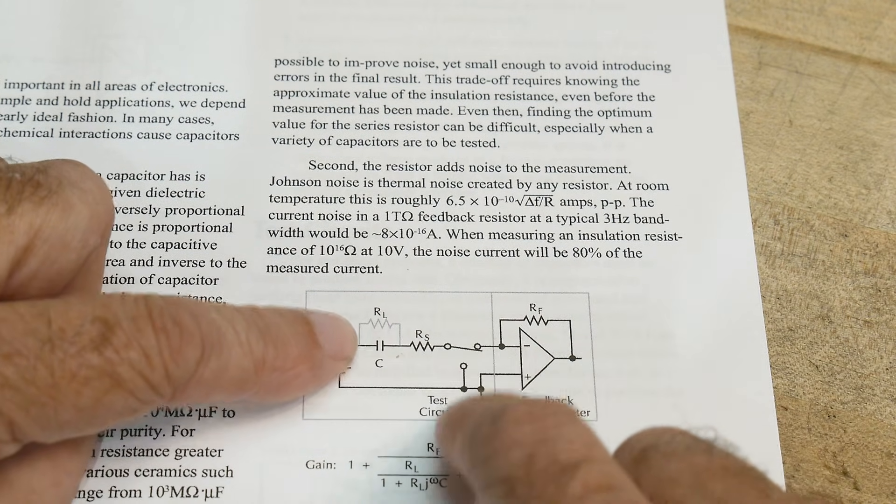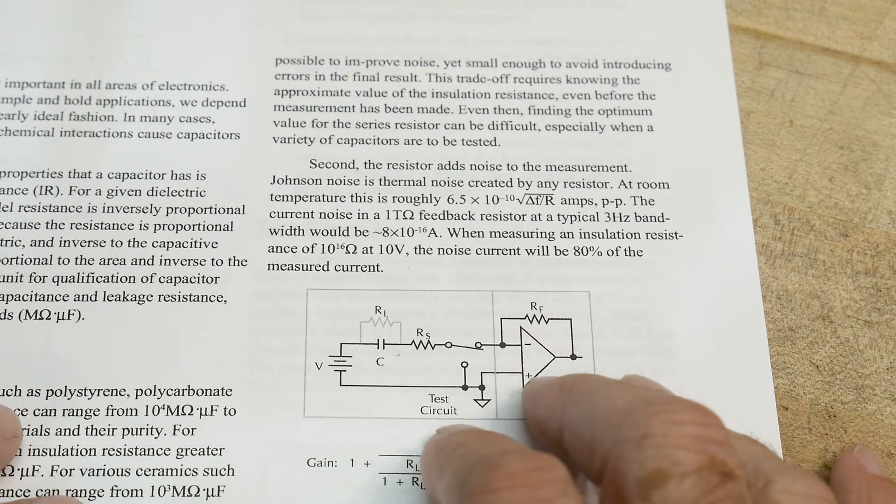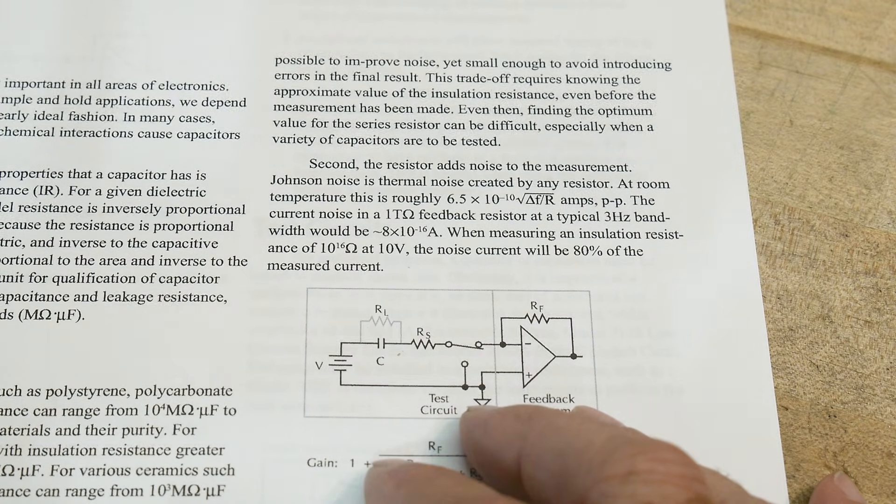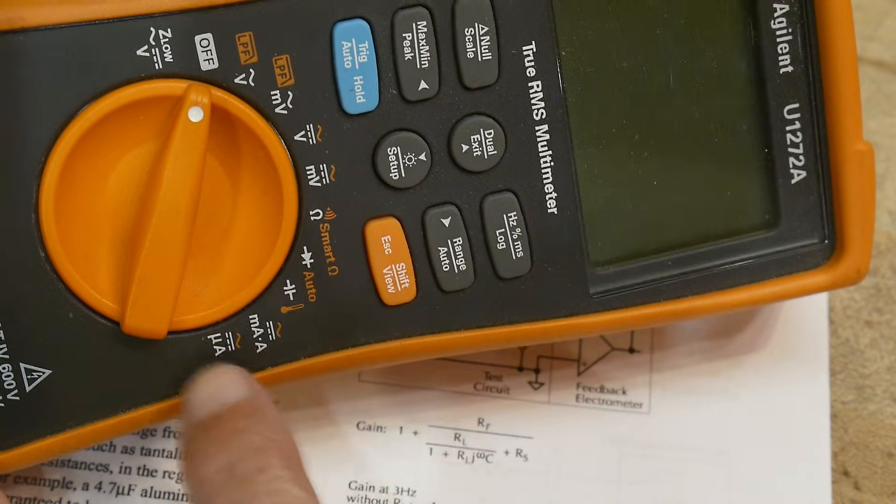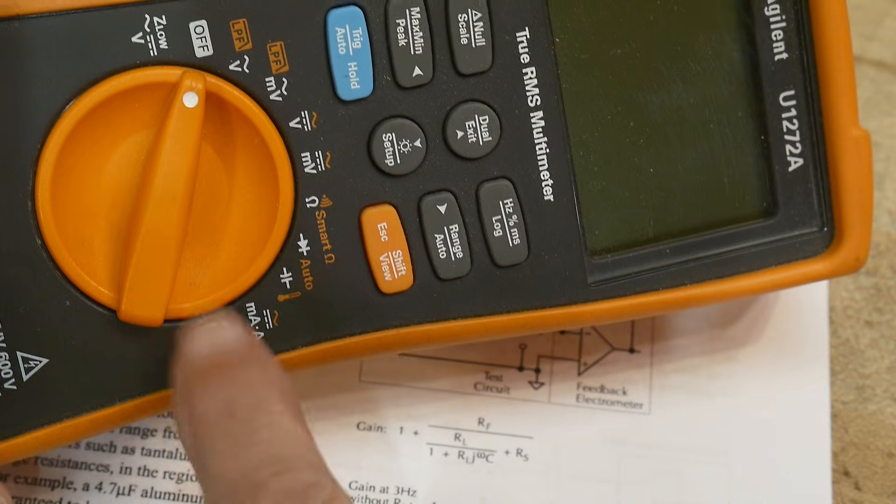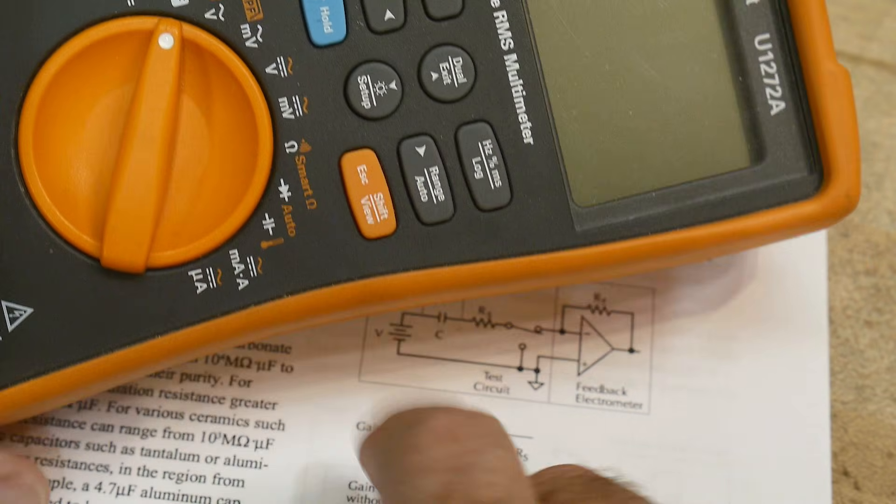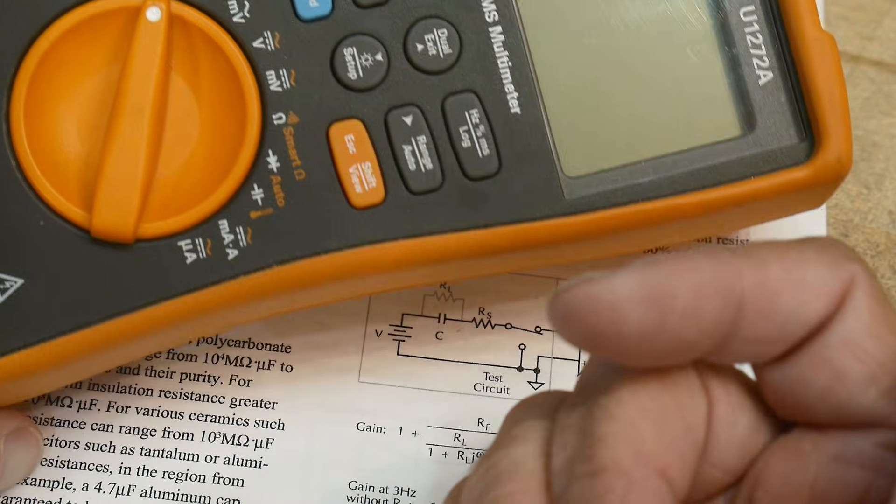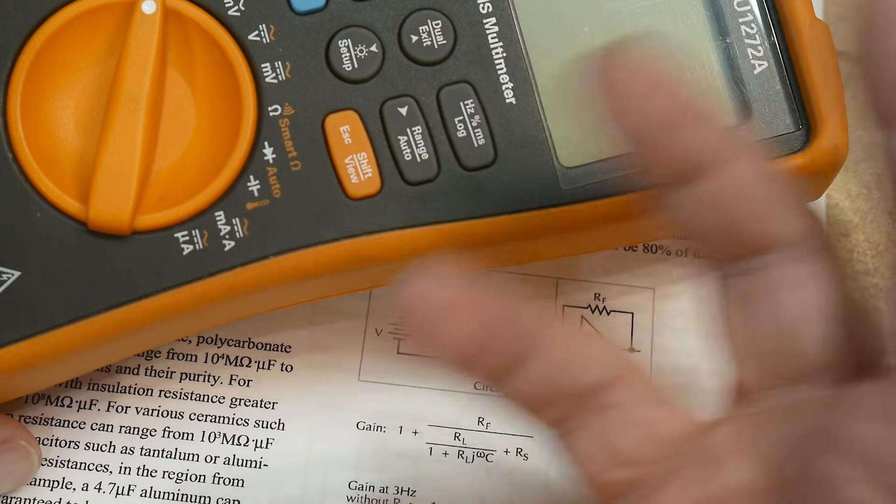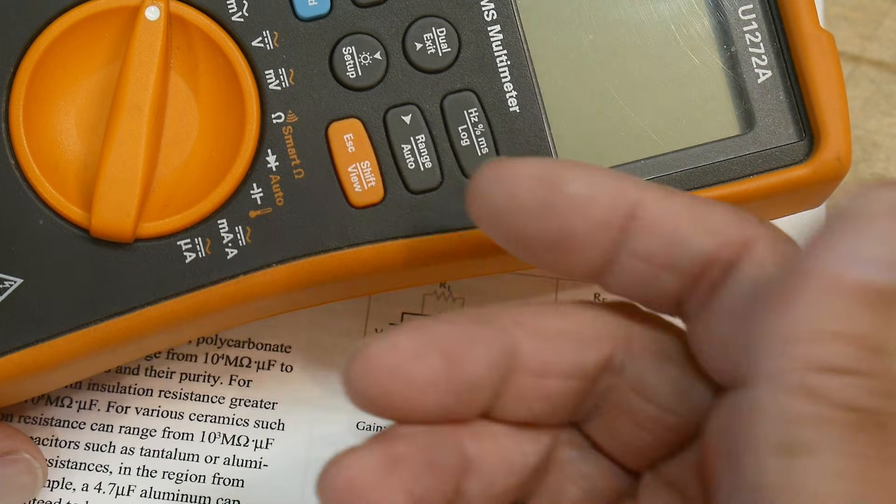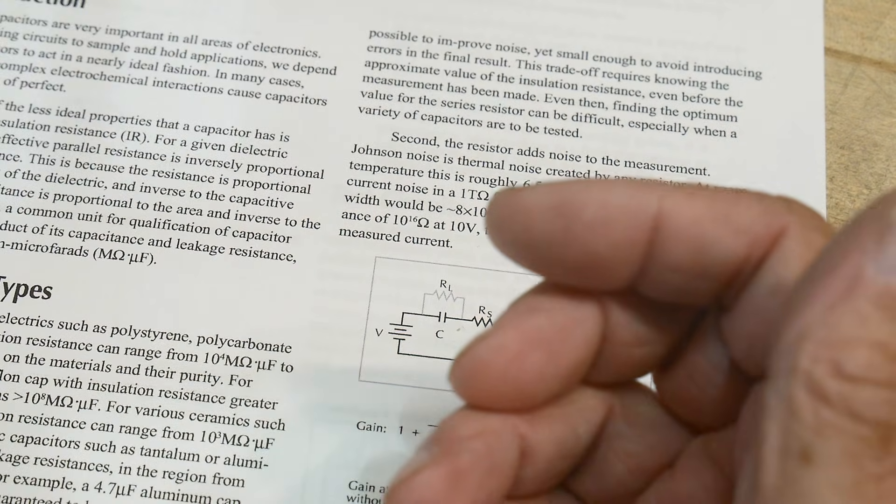I've talked about this before, just with a standard meter that actually has a microamp setting. You can basically test everything you need to test. And if you have a power supply that goes up to 100 volts, 300 volts, you can test the capacitor actually at its rated voltage, which is the best way to do it.